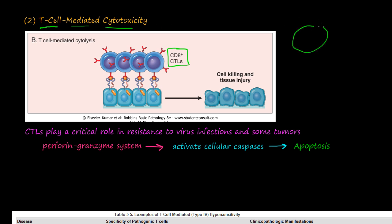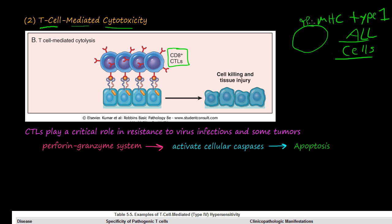All cells in your body have the major histocompatibility complex type 1. In the previous video we talked about delayed type hypersensitivity, which dealt with the major histocompatibility complex type 2. So MHC type 2 corresponds to the CD4 plus T-cells, and MHC type 1 corresponds to the CD8 plus T-cells.